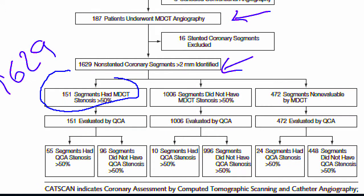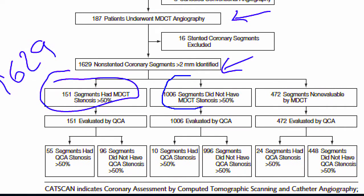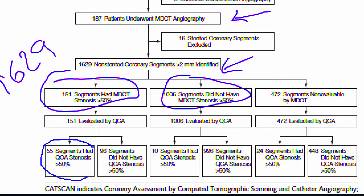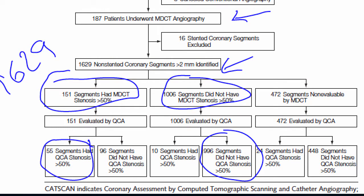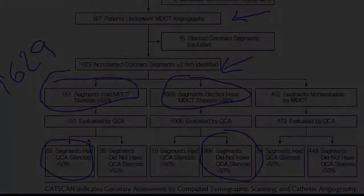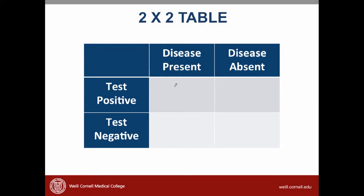A total of 1,629 arteries were looked at by both CT scan and angiography. The CT scan showed 151 blocked arteries and 1,006 unblocked arteries. When evaluated by angiography, only 55 of those 151 arteries were actually blocked. And of the arteries that CT scan did not pick up as blockages, 996 were not blocked on angiography. That may have been a little confusing, but it'll be easier when we fill in the numbers in the boxes.